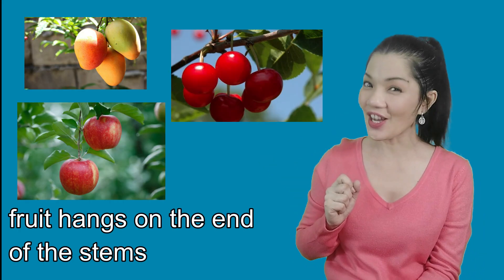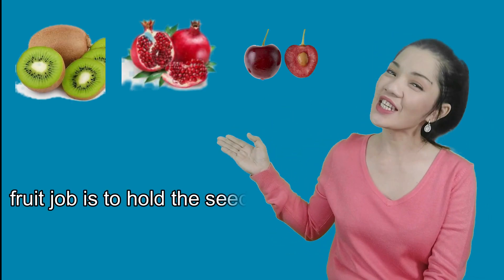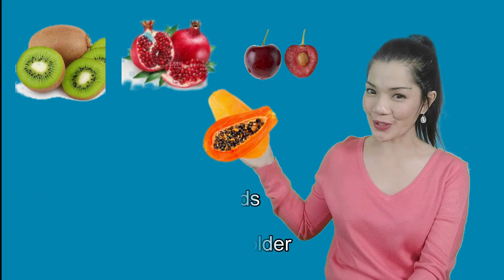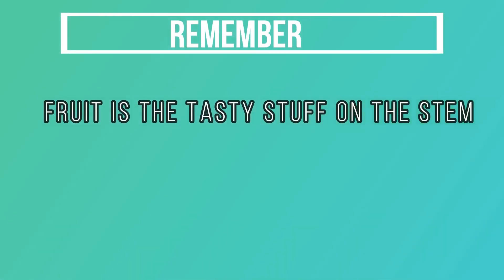The next part of the plant we're gonna learn about is the fruit. Where on the plant is the fruit? Fruit hangs on the end of the stems. What's the fruit's job? What does the fruit do? Well, the fruit's job is to hold the seeds. The fruit is the delicious seed holder. Remember, fruit is the tasty stuff on the stem.